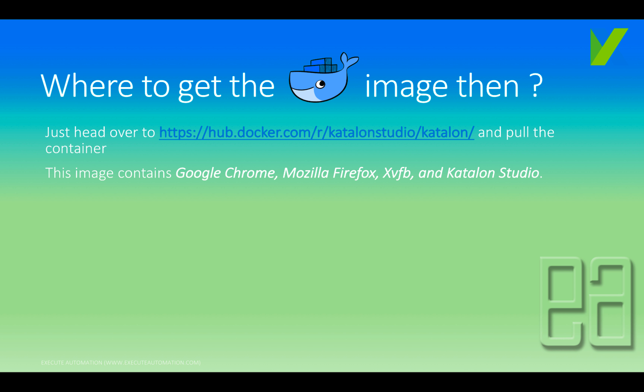Where to get the Docker image? As of now, it is not official, but you can get it from hub.docker.com/r/katalonstudio/katalon. You can pull the container into your local Docker instance. This image contains Google Chrome, Mozilla Firefox, XVFB, and Katalon Studio itself — all pre-installed, which is everything required to run Katalon Studio in console mode.